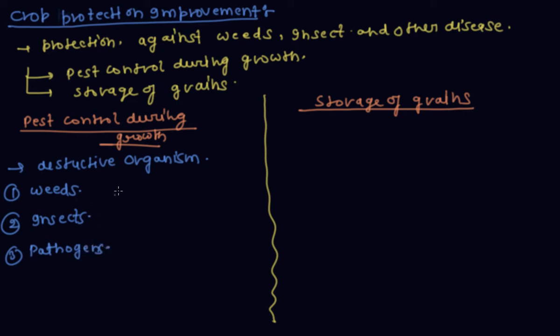Weeds are unwanted plants in the cultivated field, like gentium. These are unwanted plants.